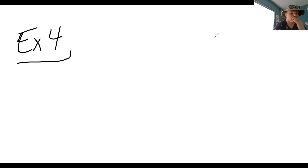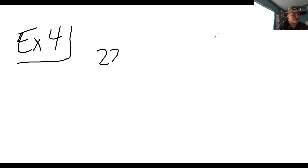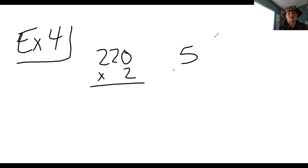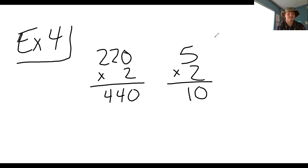Let's try example four. Instead of dividing 220 by five, double both numbers and mentally calculate the quotient. I need to multiply both by two — so 220 times two is 440, and five times two is 10. Then it wants me to mentally calculate the quotient — I take 440 divided by 10. You're just getting rid of the zero because we're dividing by 10.